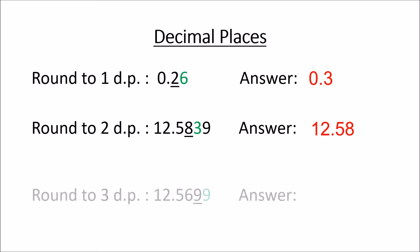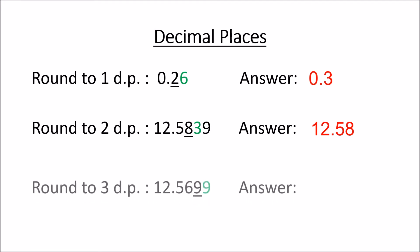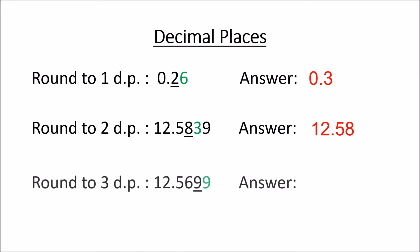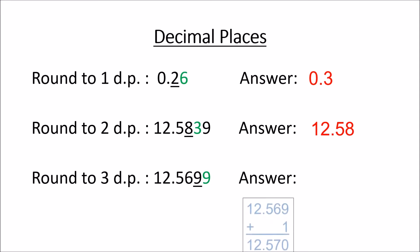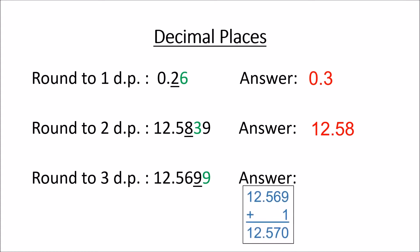Now, round to three decimal places — that means you want to look at three digits after the point. So it's 12.5699. Underline the third digit after the point, which is a 9. Look at the back of it — there is a 9. You have to add a 1 to that digit because it's 5 or more after it. So 12.569 plus 1 gives you 12.570. Or 69 plus 1 is 70. So your answer is 12.570 to three decimal places.